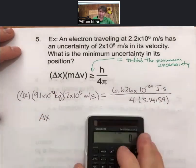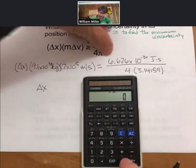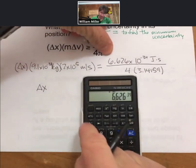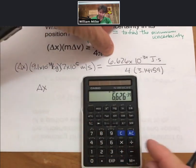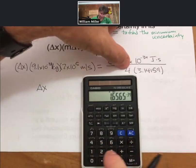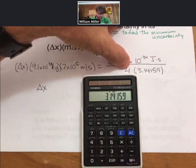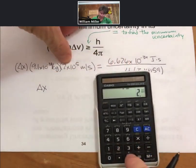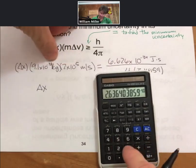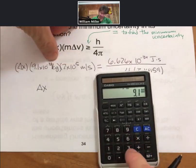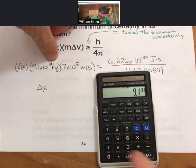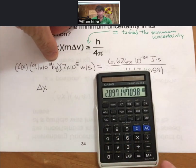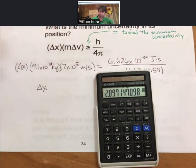I'll plug that into my calculator. So 6.626 exponent to the negative times 10 to the minus 34, divided by 4, divided by 3.14159. And then divide it by 2 times 10 to the 5th, divided by 9.1 times 10 to the minus 31. And I get 2.90 times 10 to the minus 10.